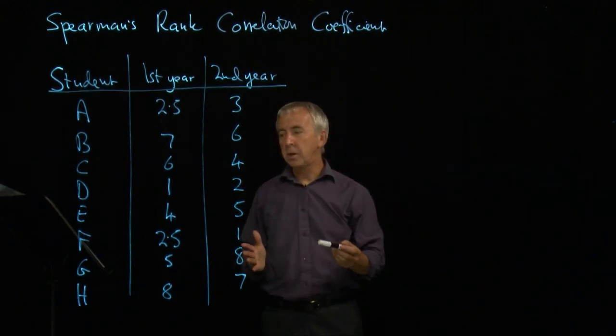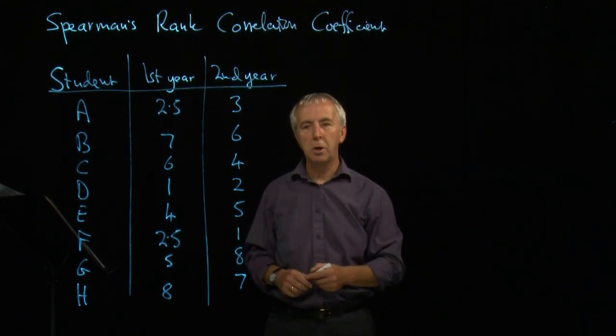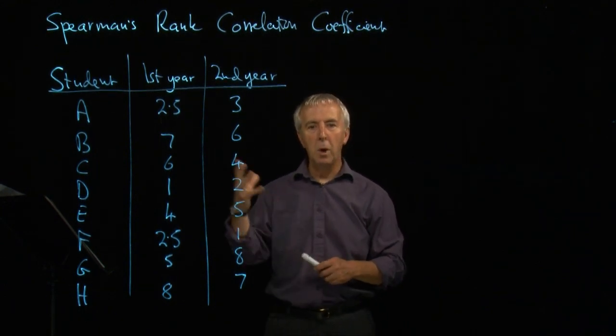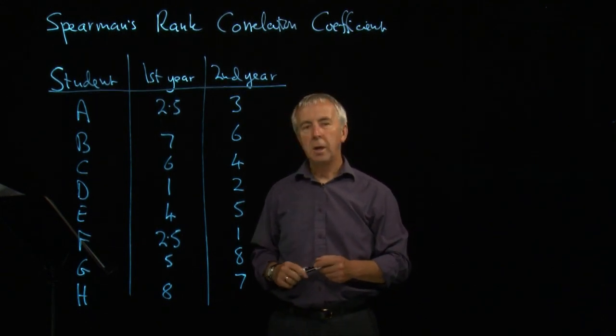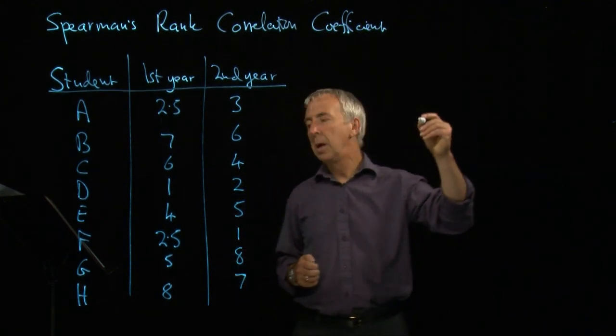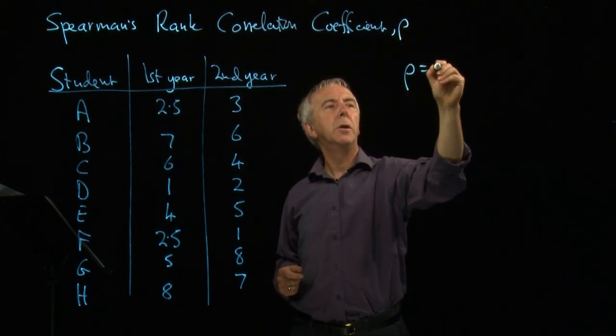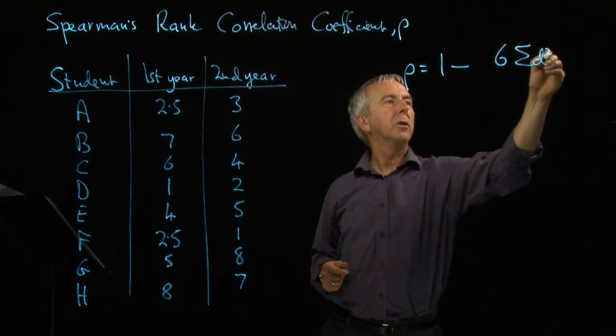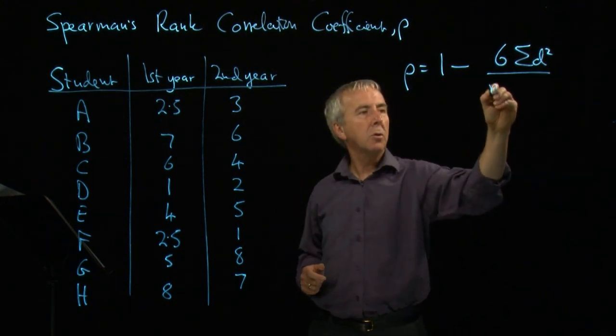We could plot these on a scatter diagram, and we'd guess we'd get quite a good correlation, because you'd expect positions to be related. If you're good one year, you're probably going to be pretty good the second year. But Spearman invented a formula for calculating a correlation coefficient, and we usually call it rho, and the formula is one minus six times sigma d squared over n times n squared minus one.